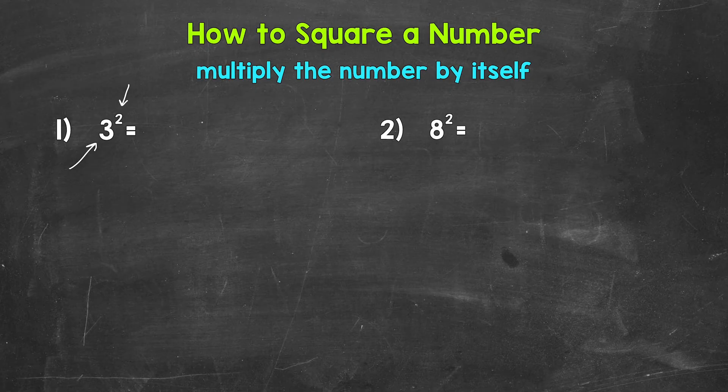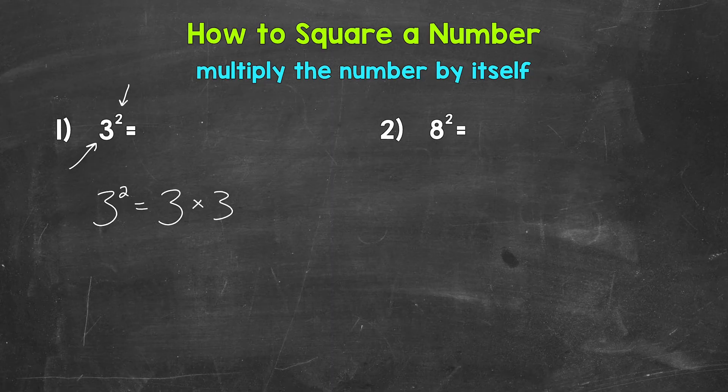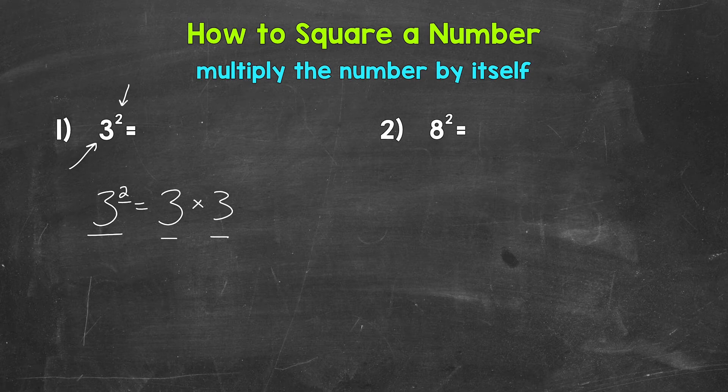The exponent tells us how many times to expand the base out and multiply. Let me rewrite this here. So 3 squared equals, well, this means 3 times 3. The base of 3 expanded out 2 times. So we are multiplying that number by itself. 3 times 3. And we know that 3 times 3 equals 9.